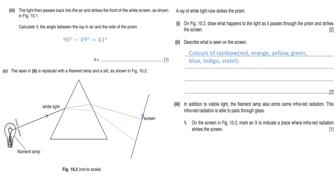What is seen on the screen is the colors of the rainbow — the visible spectrum. The colors seen are red, orange, yellow, green, blue, indigo, and violet. Infrared radiation is also emitted by the filament lamp and is able to pass through the glass. Since infrared comes before visible light in the spectrum, you need to place the mark X above the red light on the screen, as shown on the diagram.